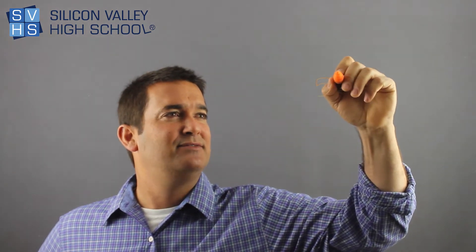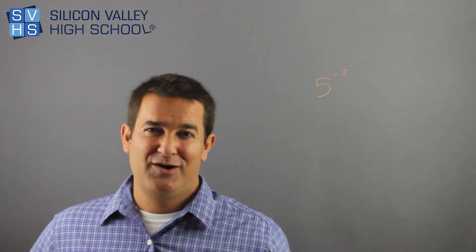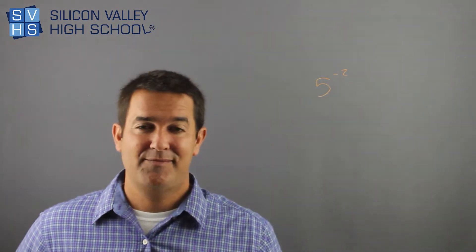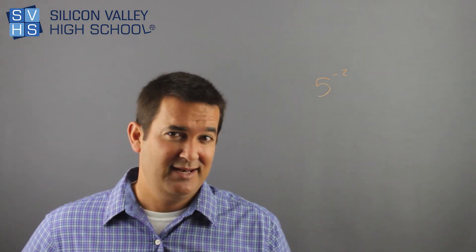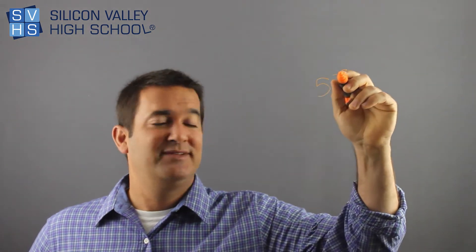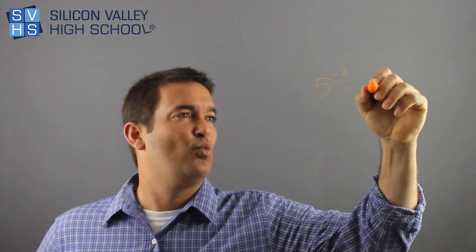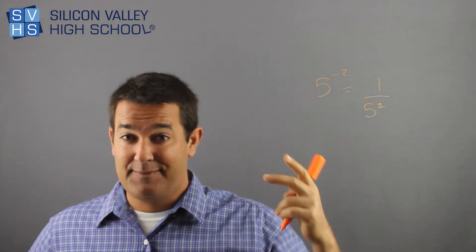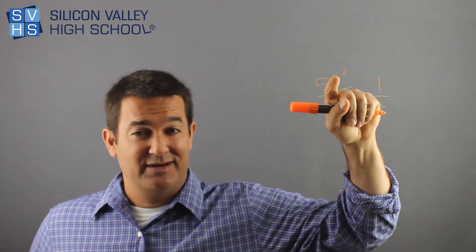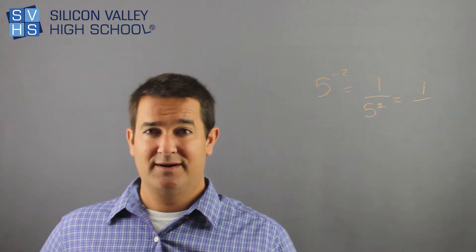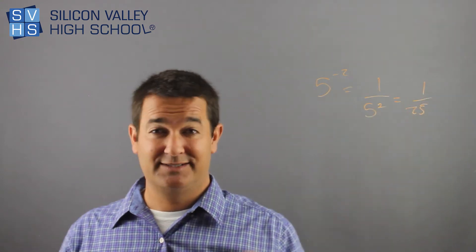Negative exponents are also pretty easy. If you have 5 to the negative 2, you might think: 5 to the 2 is 25, so what's the negative about? Whenever you have a negative exponent, all you do is take the reflippical. If this is 5 to the negative 2, it's the same as 1 over 5 to the positive 2 — so step 1 is flip it. If you have a negative exponent, flip it and don't worry too much. Now it's 1 over 5 squared, which is 25. There's your answer.